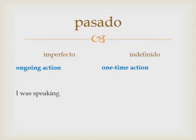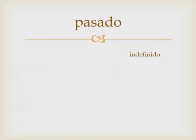For example, 'I was speaking' or 'I used to speak' would be the imperfecto, as opposed to 'I spoke,' which would be the indefinido. That is the difference between the two past tenses in English. So the indefinido is the focus of this lesson.